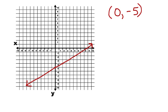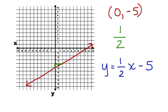What about the slope? We go up 1 and over 2, so the slope is equal to positive one-half. Now let's write the equation of the line: y equals one-half x minus 5. Our work is now complete.